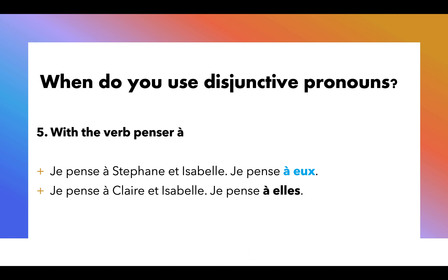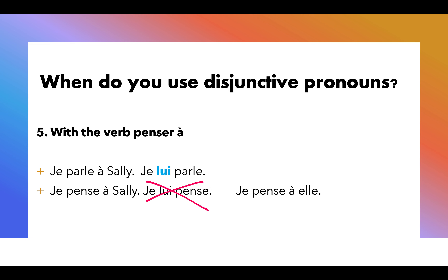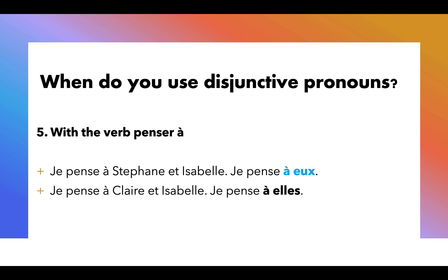So with penser à, we can't use an indirect object pronoun. If I say je pense à Sally and I keep talking about Sally, I can't use lui there. I would just have to replace Sally with a disjunctive pronoun: je pense à elle. Let's look at a few others. Je pense à Stéphane et Isabelle — Stéphane is a boy, Isabelle is a girl — je pense à eux. Je pense à Claire et Isabelle — je pense à elles. They're both female.